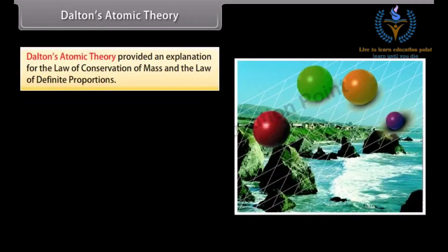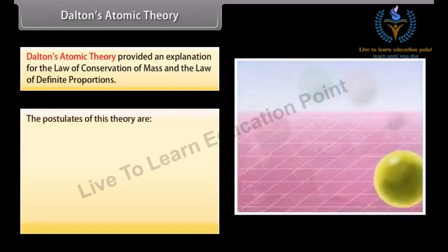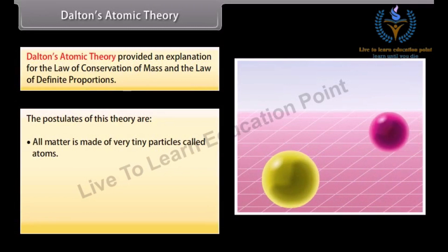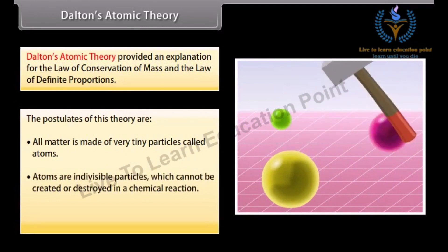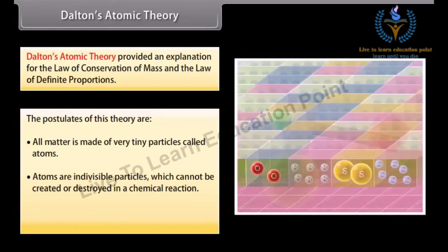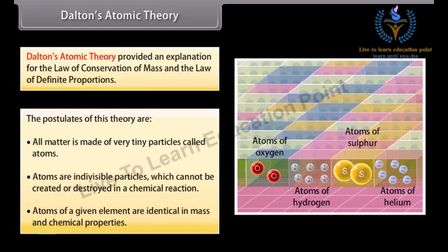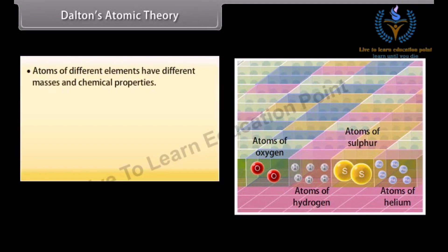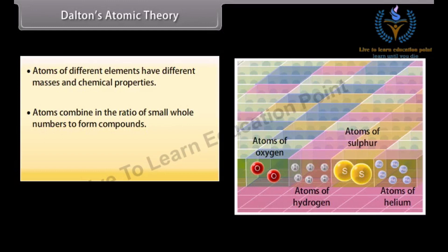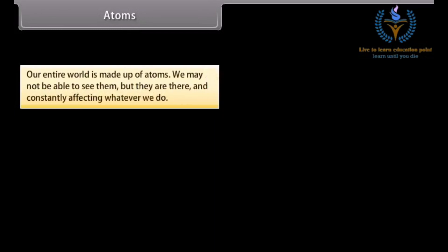Dalton's atomic theory provided an explanation for the law of conservation of mass and the law of definite proportions. The postulates of this theory are: 1. All matter is made of very tiny particles called atoms. 2. Atoms are indivisible particles which cannot be created or destroyed in a chemical reaction. 3. Atoms of a given element are identical in mass and chemical properties. 4. Atoms of different elements have different masses and chemical properties. 5. Atoms combine in the ratio of small whole numbers to form compounds. 6. The relative number and kinds of atoms are constant in a given compound.